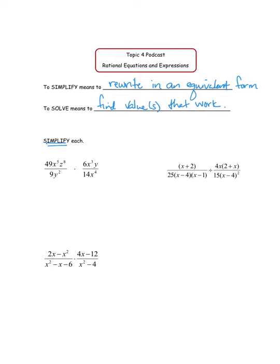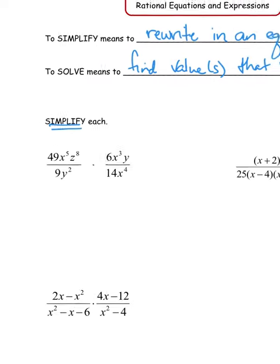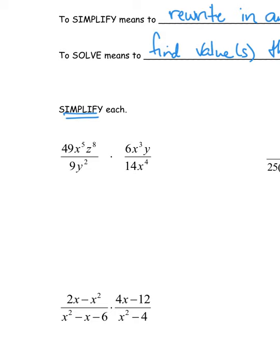For example, at a glance I've got a 49 and a 14 — those are both divisible by 7, so I'll divide each by 7. Then I look at the 6 and the 9 — both divisible by 3, so I'll divide each by 3. Then I see a 2 in the top and bottom, so I'll divide each by 2. Starting just with the numbers, I'm seeing a 7 in the numerator and a 3 in the denominator, and everything else was a 1.